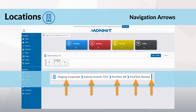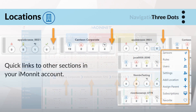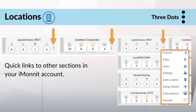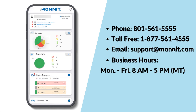The navigation arrow on the top of the screen helps map how deep you are in the account and what you've selected. A blue solid line at the end of the bar means you've reached the end of your depth. The three dots on the location card are quick links to other sections in your iMonit account — selecting any of these takes you out of locations and brings you to the designated function. Thank you for watching; feel free to contact us if you have further questions.